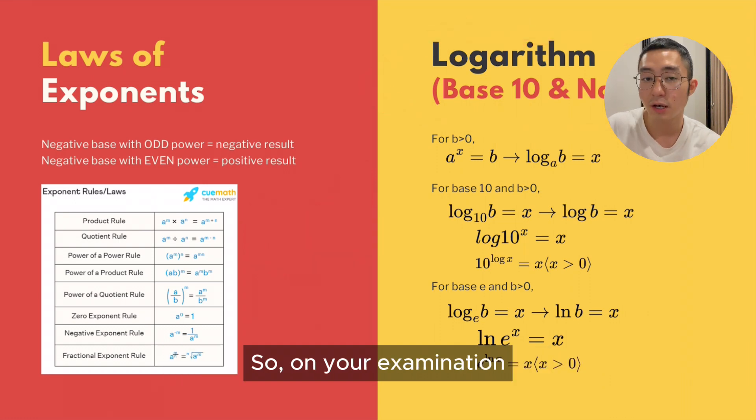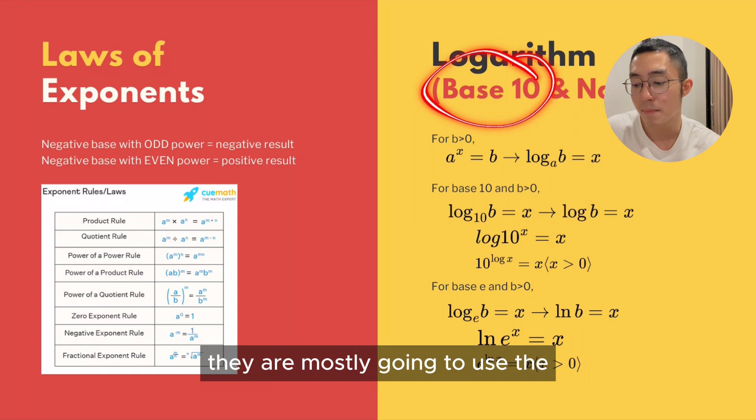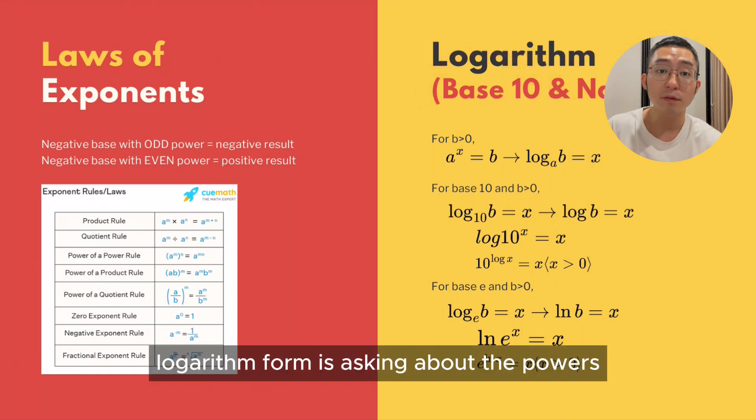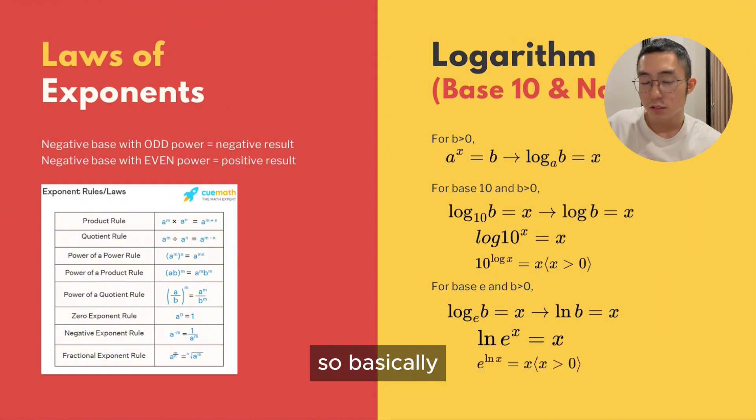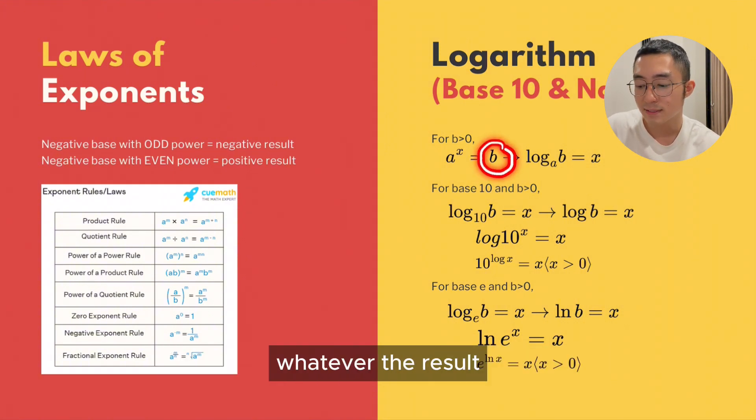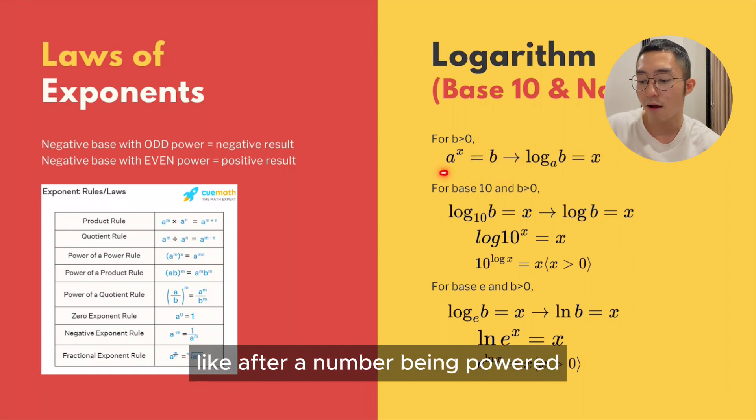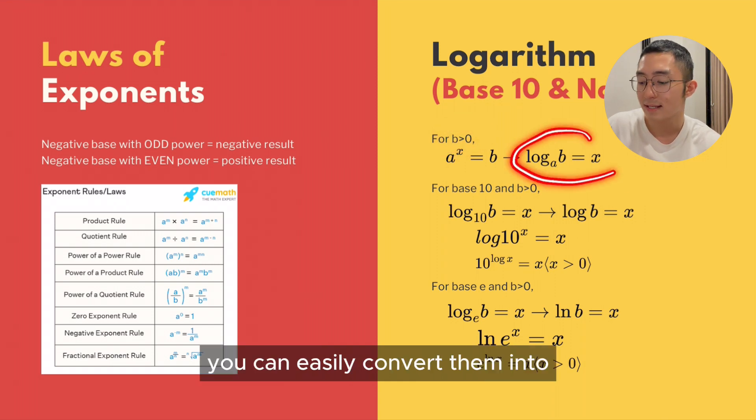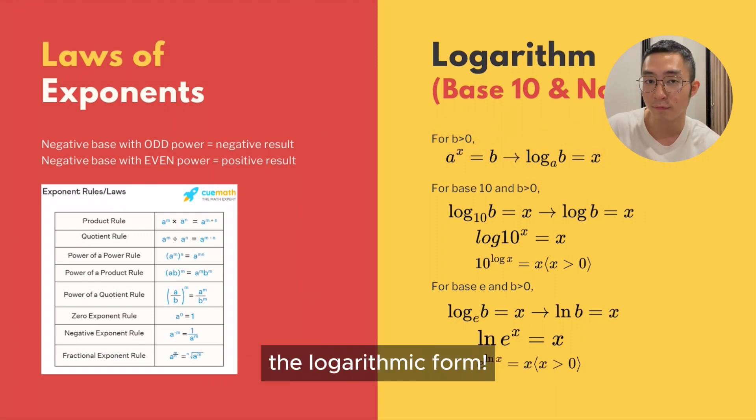On your examination, they are mostly going to use base 10 and base e, or you call it natural logarithm. Logarithmic form is asking about the powers. Basically, the rule for logarithmic is that whatever the result on the right-hand side, like after a number being powered, this argument must be positive. If that's so, you can easily convert that into logarithmic form.